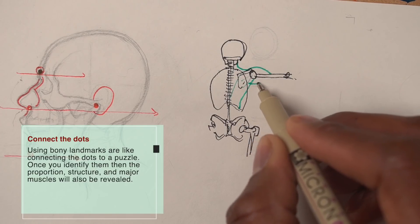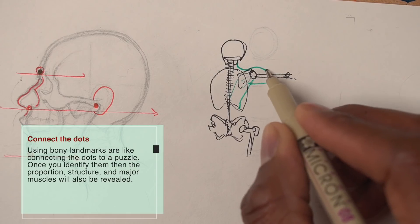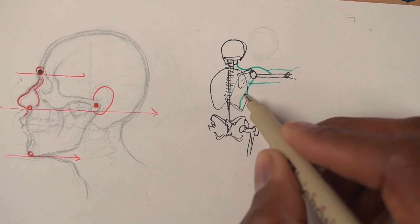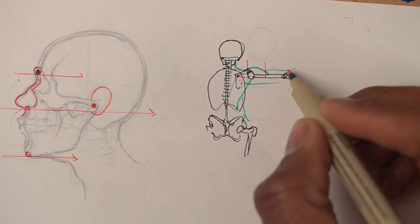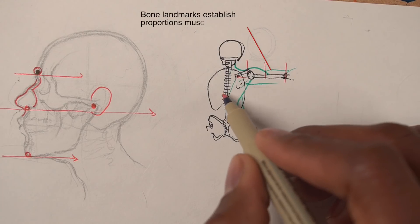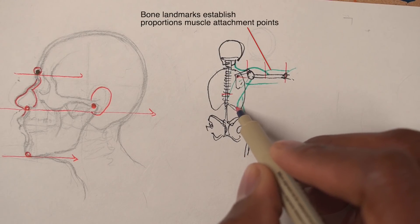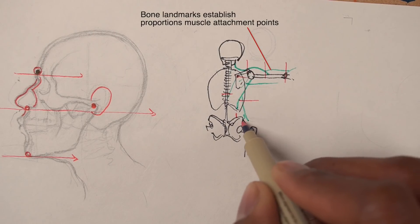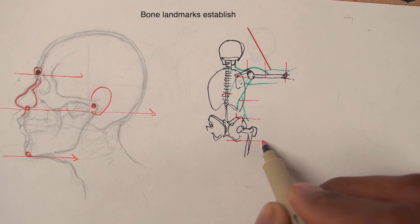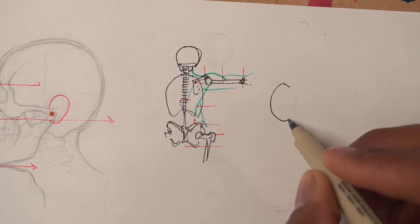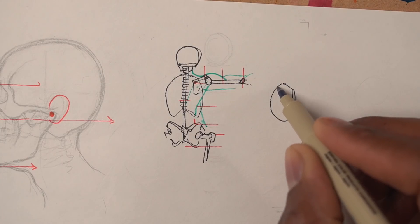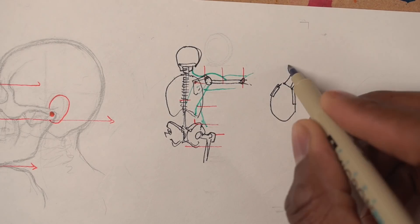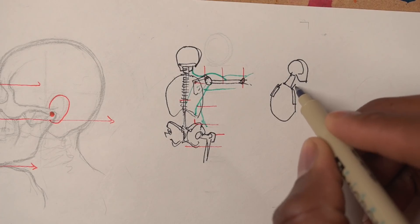The bones are responsible for most of the landmarks that you'll use to establish your anatomy. For example, when you're drawing the head or portraits, the main landmarks that we use, like where the eyes are, the eyebrows, the base of the nose, the chin, the ear, all of those landmarks are really marked by bone. Even in terms of knowing the proportions of the body, all of those things are based on bony landmarks.